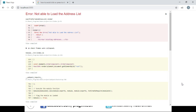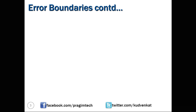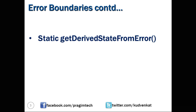This is where we make use of error boundaries in React. Error boundaries are React components that catch JavaScript errors which occur anywhere in their child component tree, log those errors, and display a fallback UI instead of showing the component tree that crashed. Error boundaries catch errors which occur during rendering, in any lifecycle method, or in constructors of the whole tree below them. A class component becomes an error boundary if it defines either or both lifecycle methods: static getDerivedStateFromError and componentDidCatch. We use getDerivedStateFromError to render a fallback UI after an error is thrown, and componentDidCatch to log error information.